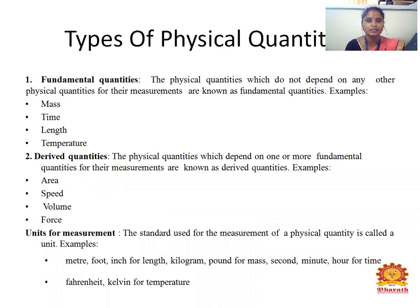What are the types of physical quantities? Fundamental quantities are physical quantities which do not depend on any other physical quantities for their measurement. For example, mass, time, length, and temperature are fundamental quantities. The next type is derived quantities — physical quantities which depend on one or more fundamental quantities for their measurement. For example, area, speed, volume, and force are derived quantities.